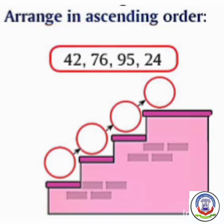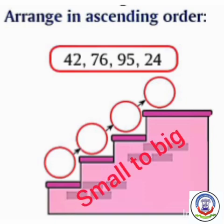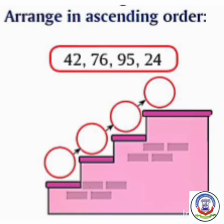Now students, look at these numbers: 42, 76, 95, 24. We have to arrange them in Ascending Order. That is, we have to arrange from small to big. First, we will find the smallest number.